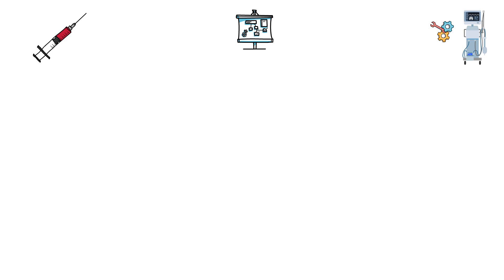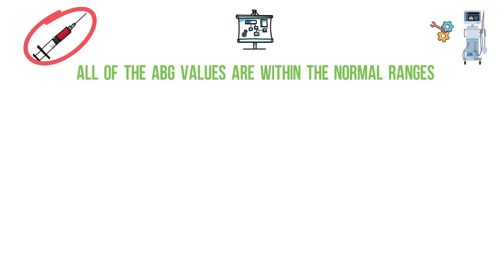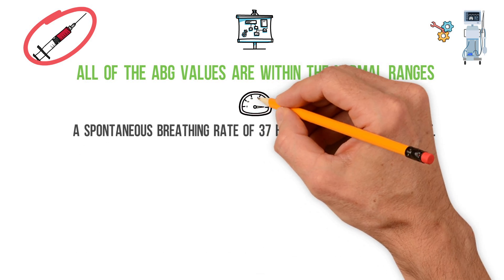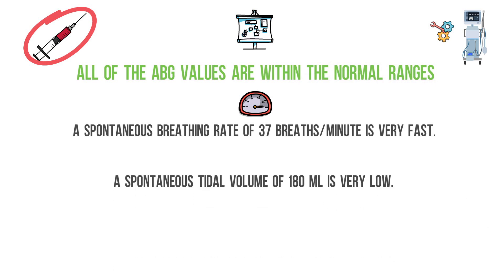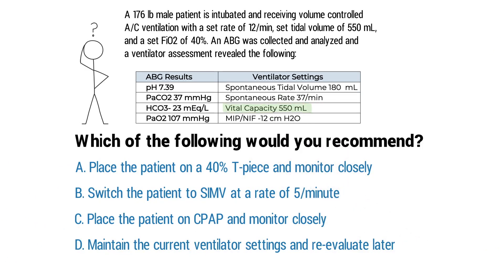To get this one right, you need to interpret the ABG results and make appropriate changes if necessary. The ABG values are all within normal ranges, so the ABG is normal. Then look at the bedside measurements from the ventilator assessment: a spontaneous breathing rate of 37 breaths per minute is very fast, a spontaneous tidal volume of 180 milliliters is very low, and the vital capacity and MIP are decreased as well. All of these findings indicate the patient is not ready for a spontaneous breathing trial.